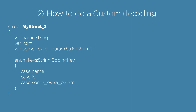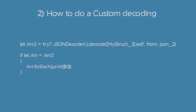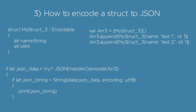We just have to map all the keys we want to extract. Define now the Decodable protocol — we have to implement the init from decoder function. The JSON decoding operation is performed by calling the same function as viewed in the previous example.